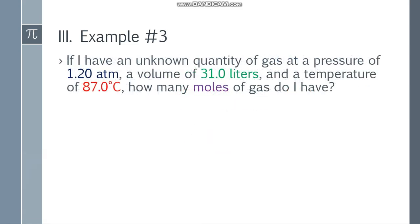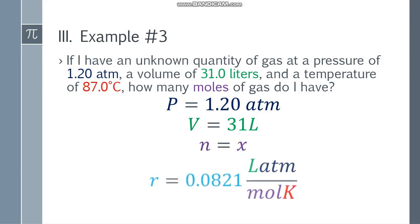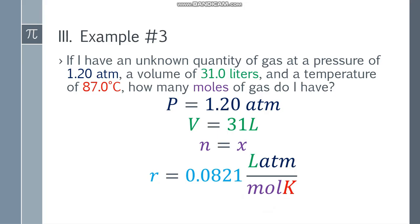Let's move on to example number 3. If I have an unknown quantity of gas at a pressure of 1.20 atm, a volume of 31.0 liters, and a temperature of 87 degrees Celsius, how many moles of gas do I have? Pressure natin ay 1.20 atm. V, a volume is 31 liters. Ang n natin that will be x. At yung r, yung gas constant, that will be 0.0821 at yung unit niya. At temperature, that will be 87 degrees Celsius. ATM, correct liters at Celsius. Oops! Kailangan natin ikonvert to Kelvin muna. That will be 360.15 Kelvin. Okay na.